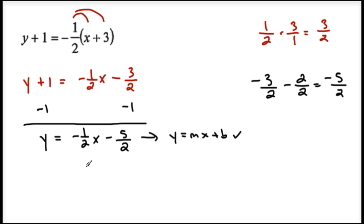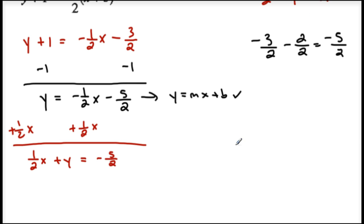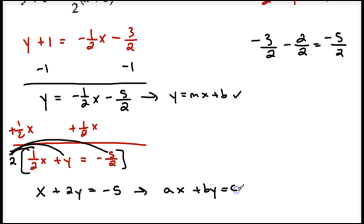For standard form, add 1 half x to both sides to get x and y on the same side. So I get 1 half x plus y equals negative 5 halves. My first term is positive. I have fractions with denominator 2, so multiply the whole equation by 2. 2 times 1 half x is x; 2 times y is plus 2y; 2 times negative 5 halves gives me negative 5. So x plus 2y equals negative 5 is my standard form: ax plus by equals c.